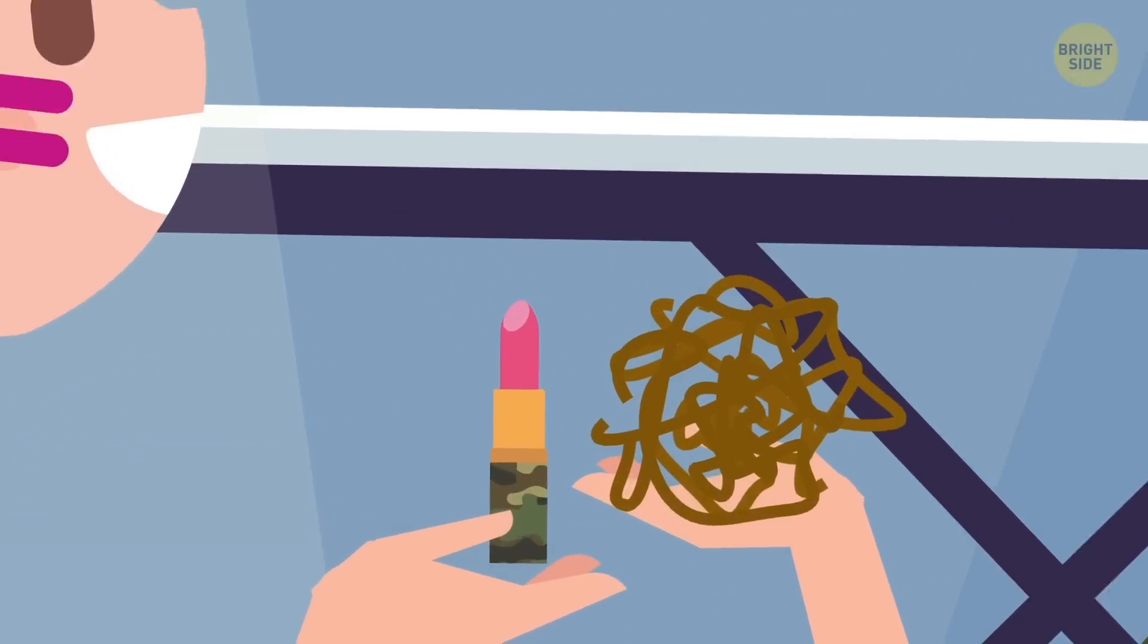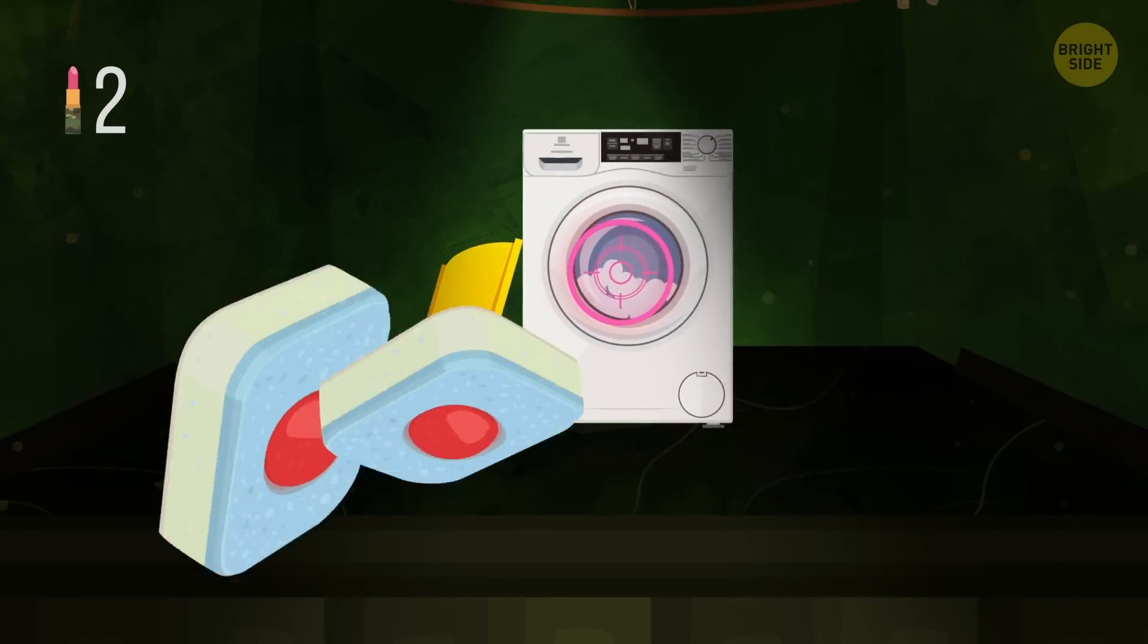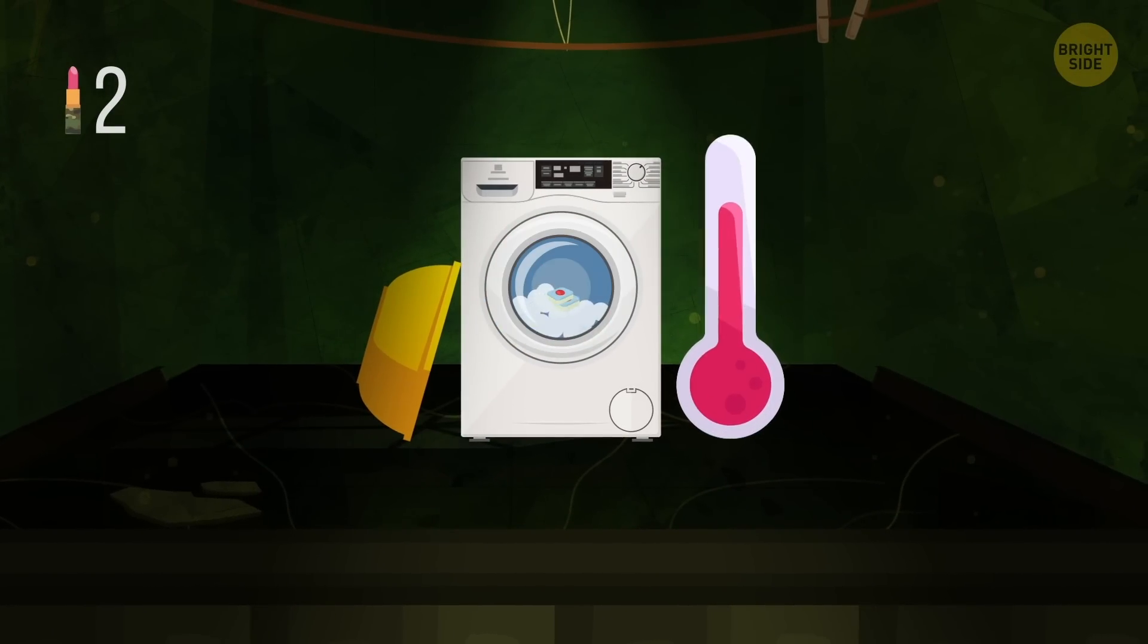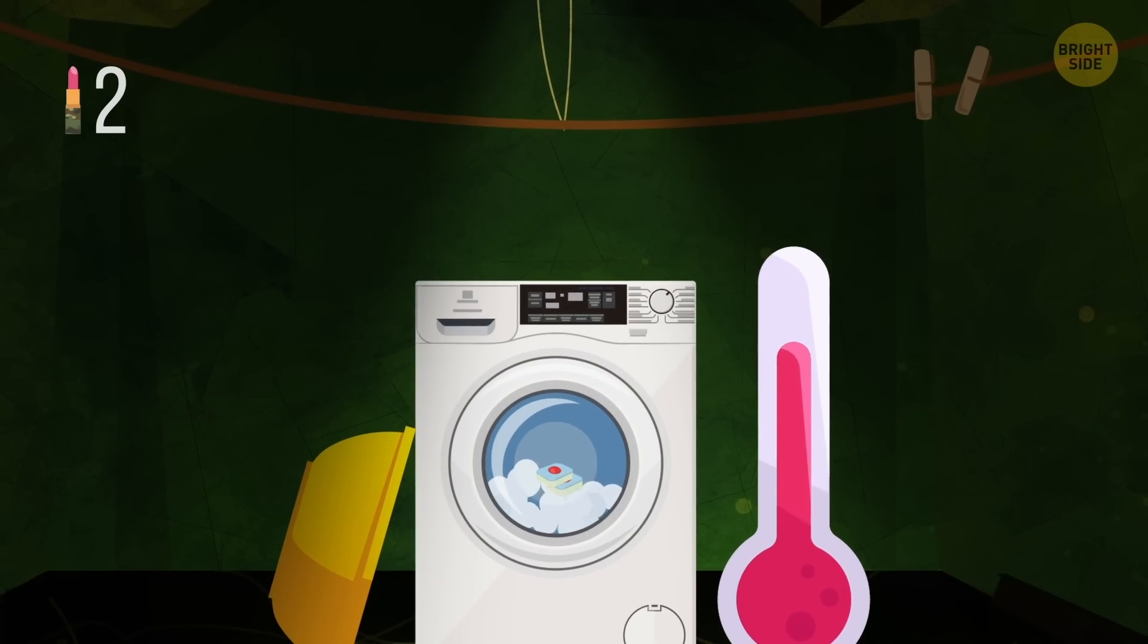But that's not the only tip I have for you today. Put two dishwasher tablets into the drum of your washing machine and run a hot cycle with the machine empty. This way, you'll get rid of microbes, dirt, and even lime scale.